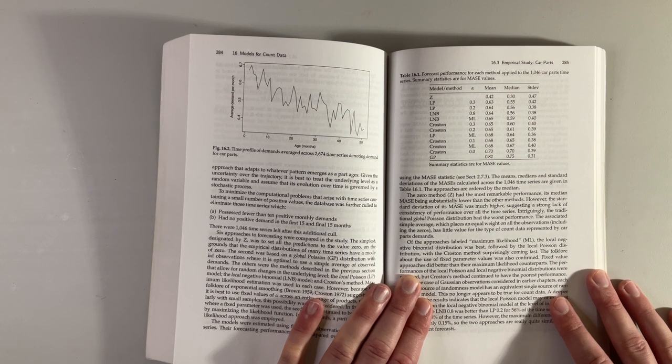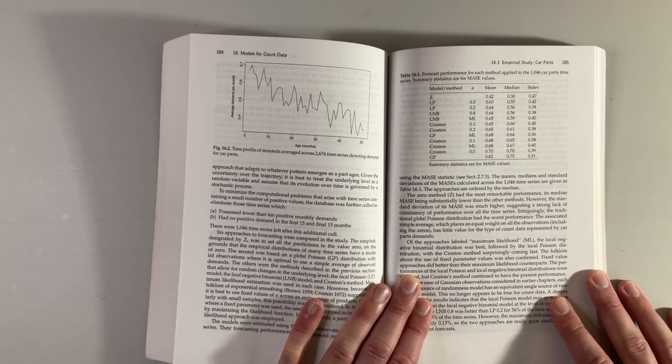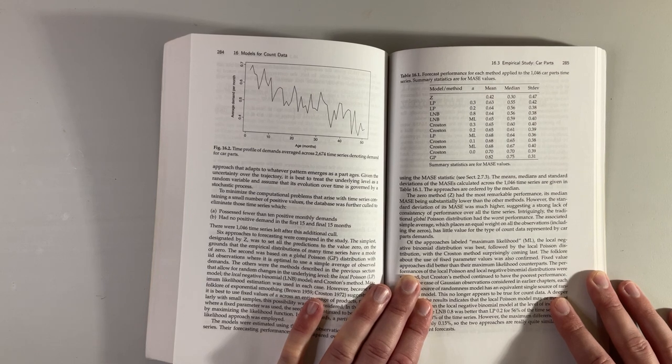Third, they reported the mean, median, and standard deviation. Fourth, they had a benchmark performance of a model they called Z. Z was simply predicting zero, always. Though its performance was not good, it was nice to have a sense of what kind of error a simple assumption like that would work out to be.